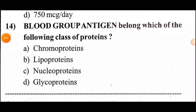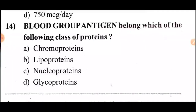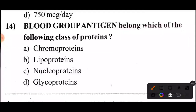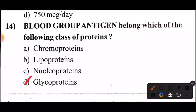Question 14: Blood group antigens belong to which of the following class of proteins? Options A, B, C, D — guess in 5 seconds. Answer: Blood group antigens belong to option D, glycoproteins.